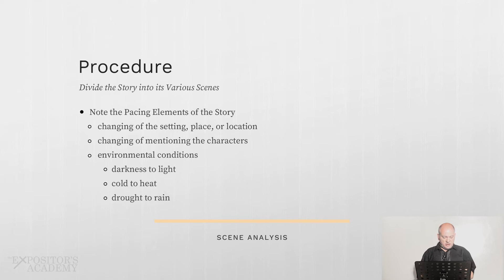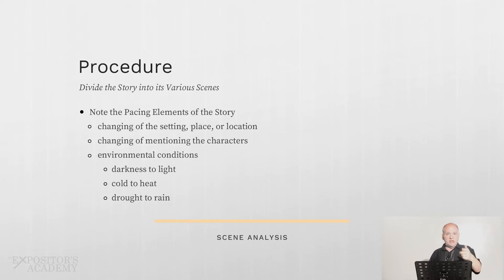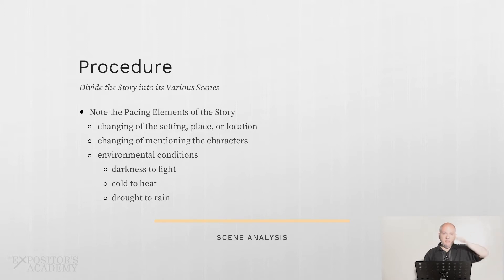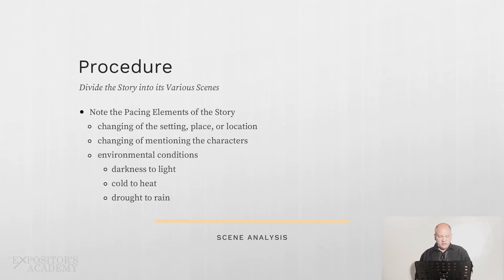You can also use what I call pacing elements. There could be a changing of the setting — the place, the location. Remember, you've already done setting analysis. There could be a change in the characters mentioned — you've already looked at character analysis. That's why we're doing them in this order. It could also be environmental conditions: going from darkness to light, cold to heat, drought to rain. These pacing elements can tip you off that a new scene is beginning.